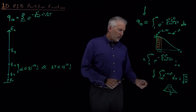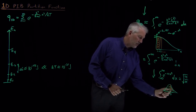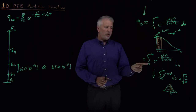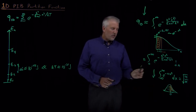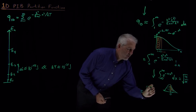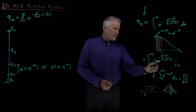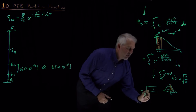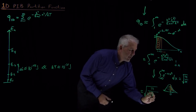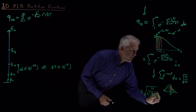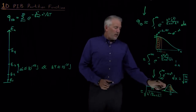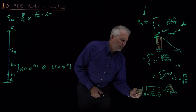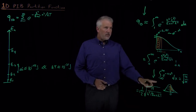We only want to calculate the integral from 0 to infinity, which is exactly half of the full Gaussian integral. That's why it's easier to take the integral from 0 to infinity instead of 1 to infinity — 0 to infinity is exactly the positive half. So the result is one half times the square root of pi over alpha, where alpha is everything in the exponent that doesn't include n², specifically h² divided by 8m a² kT.